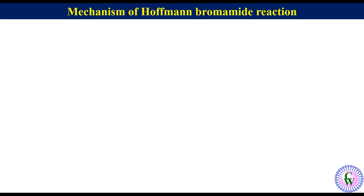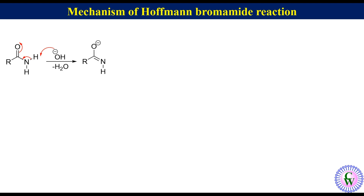Mechanism of the Hofmann bromamide reaction: a primary amide has two N–H protons which are acidic in nature. Hydroxide ion acts as a base and abstracts one of the two N–H protons to produce water and an amide anion, which has one more resonating structure.